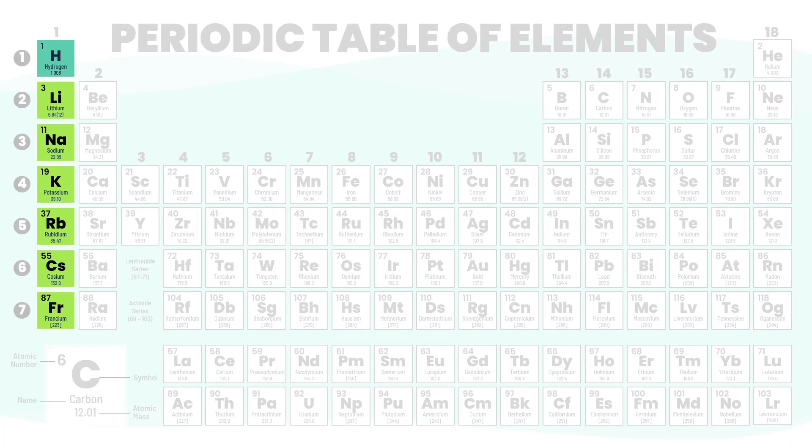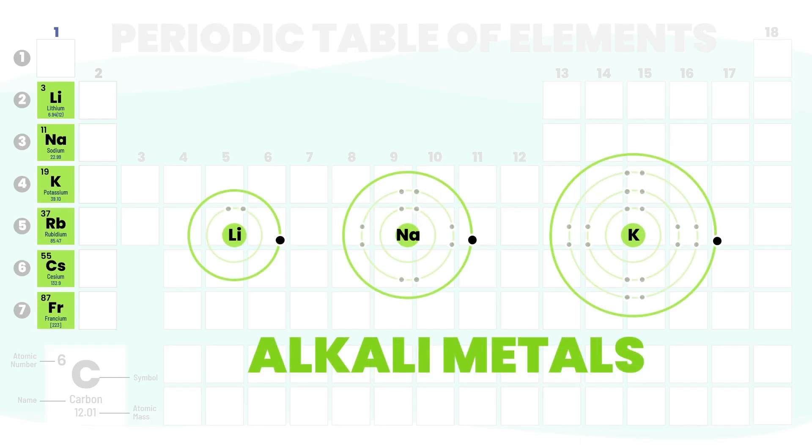Start with group 1 highlighted here. All these elements, including hydrogen, have just one valence electron. That's their common feature. Now, a quick but important note - hydrogen is here because of its single electron, but it behaves very differently. So let's focus on the elements below it: lithium, sodium, potassium, and the rest. These are the alkali metals. They all share one key trait - one outer electron and a strong drive to get rid of it.